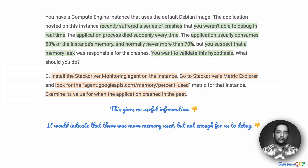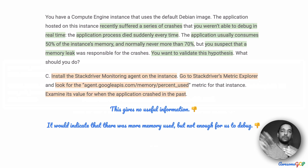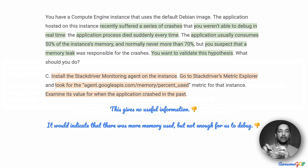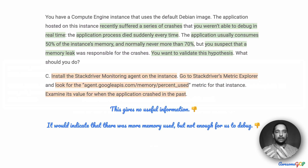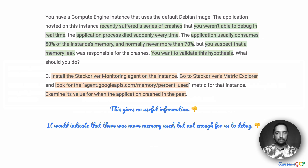It could give us a direction, saying there seems to be a sudden spike in memory usage around the time the crash is happening. But it does not give us enough to debug and investigate more. Therefore, we'll eliminate option C.